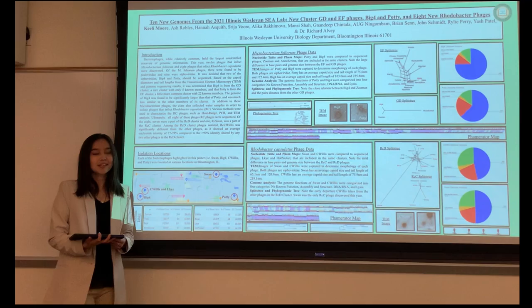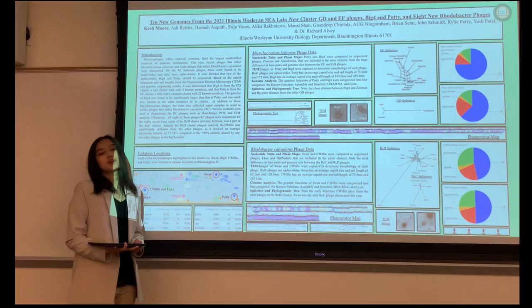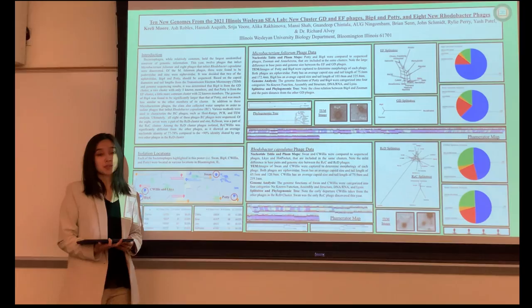We used pulse gel PCR and TEM analysis in order to sequence those phages. Seven were part of cluster RCD, whereas one, RC Swan, was part of cluster RCC.